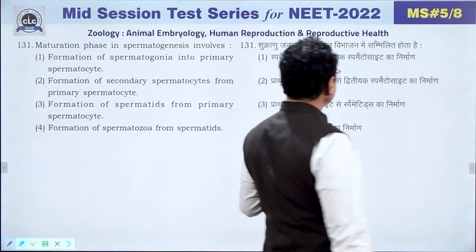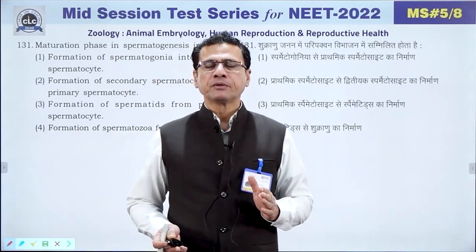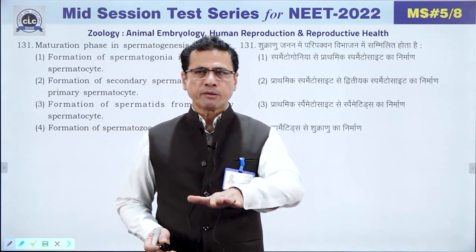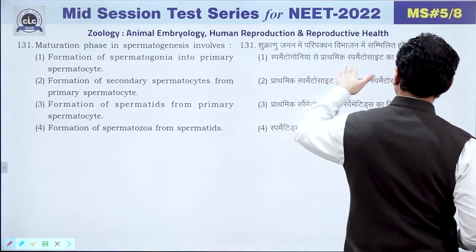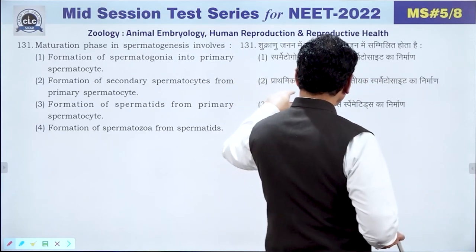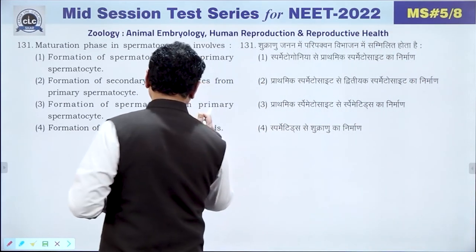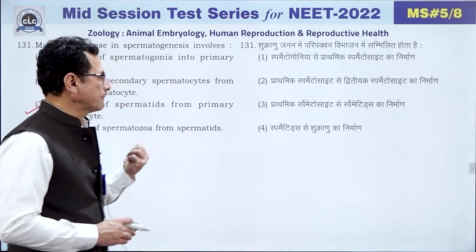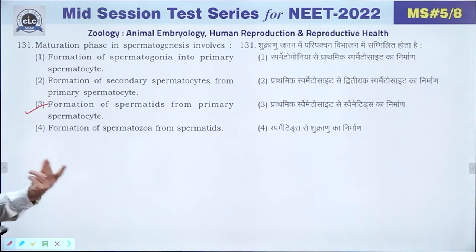Question 131: Maturation division in spermatogenesis involves meiosis — both meiosis I (primary spermatocyte to secondary spermatocyte) and meiosis II (secondary spermatocyte to spermatid). The answer is 3 — both meiosis I and meiosis II are involved.